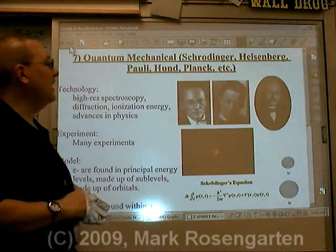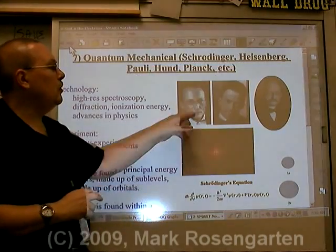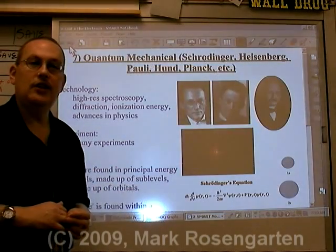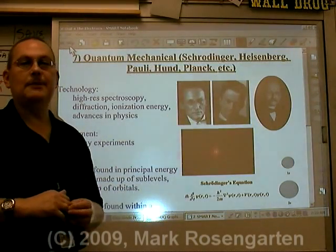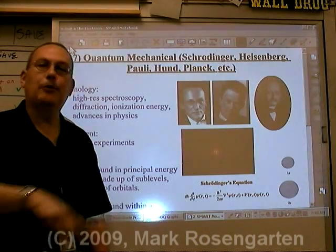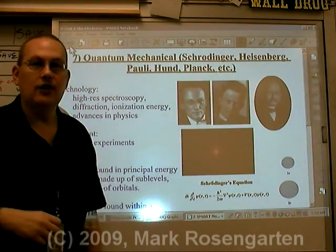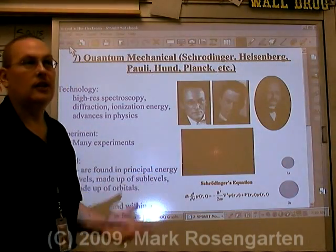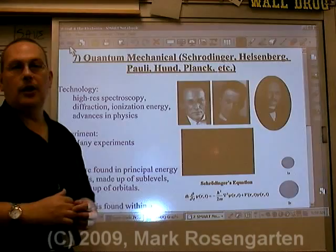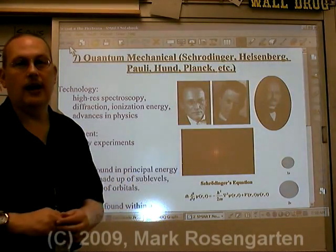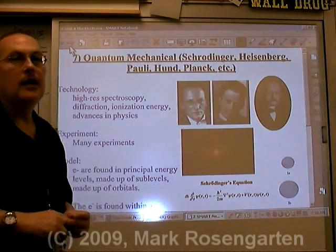A guy named Erwin Schrödinger actually came up with an equation that describes the motion of a single electron around a single proton in hydrogen. It's a very complicated equation. As soon as you throw another electron in there, it throws the whole thing right out the window.